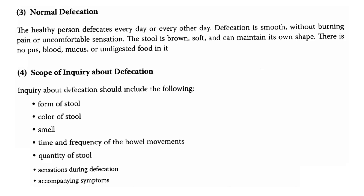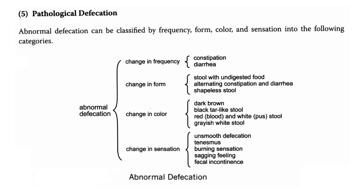In our scope of inquiry about defecation, inquiry should include the following: the form of stool, the color of stool, the smell, time and frequency of bowel movements, quantity of stool, sensations during defecation, and accompanying symptoms. Abnormal defecation can be classified by frequency, form, color, and sensation into the following categories.